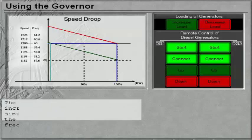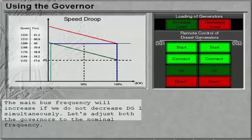The main bus frequency will decrease if we do not decrease DG1 simultaneously. Let's adjust both the Governors to the nominal frequency.